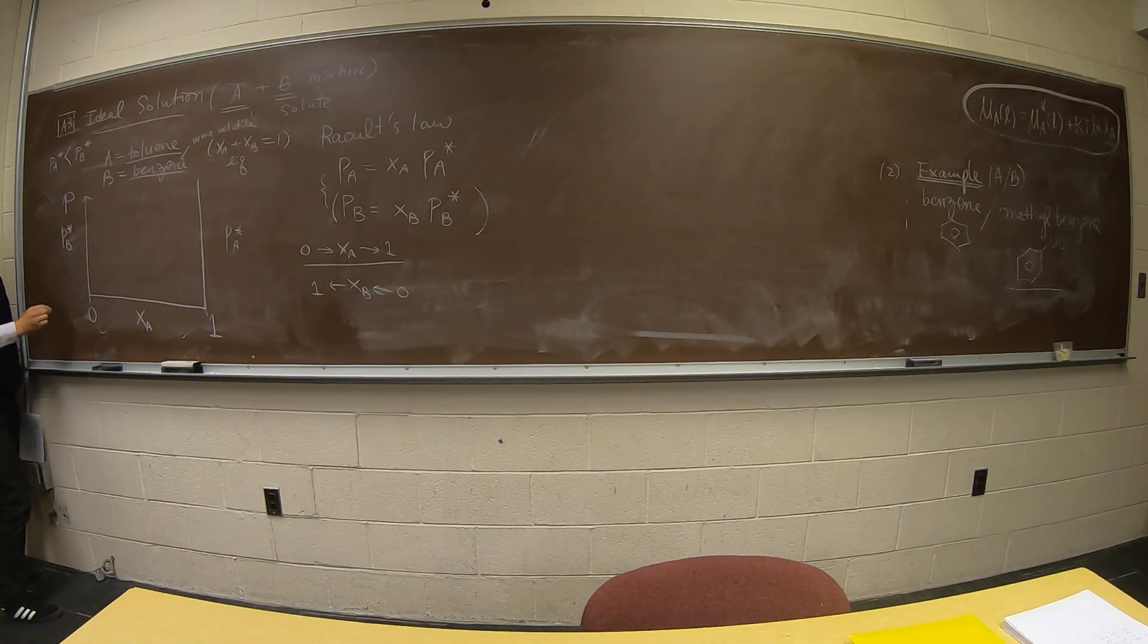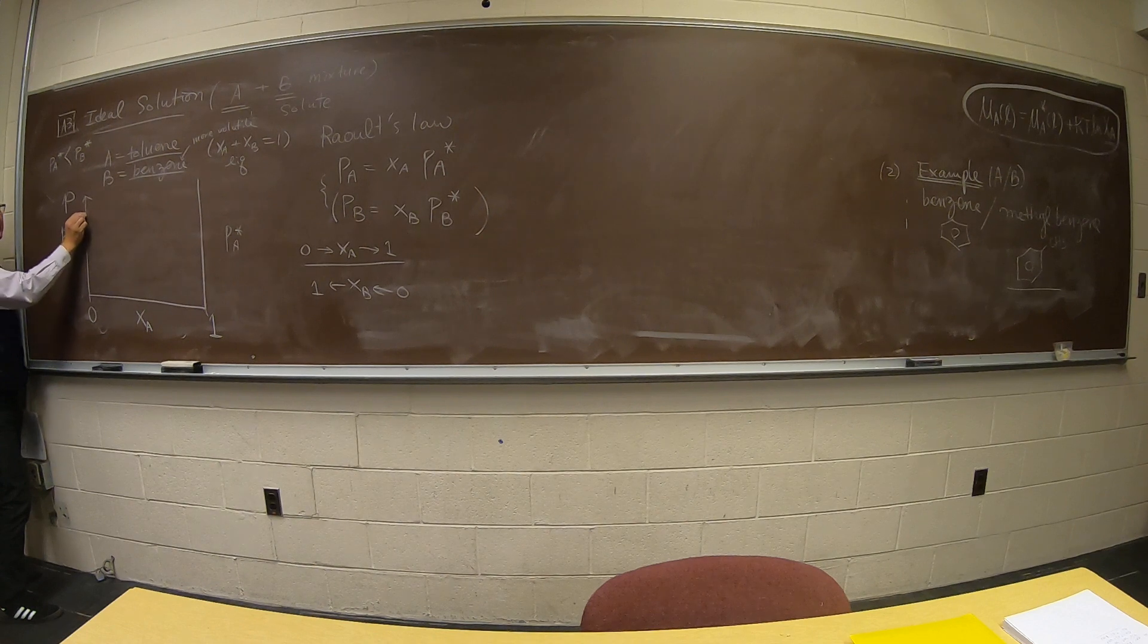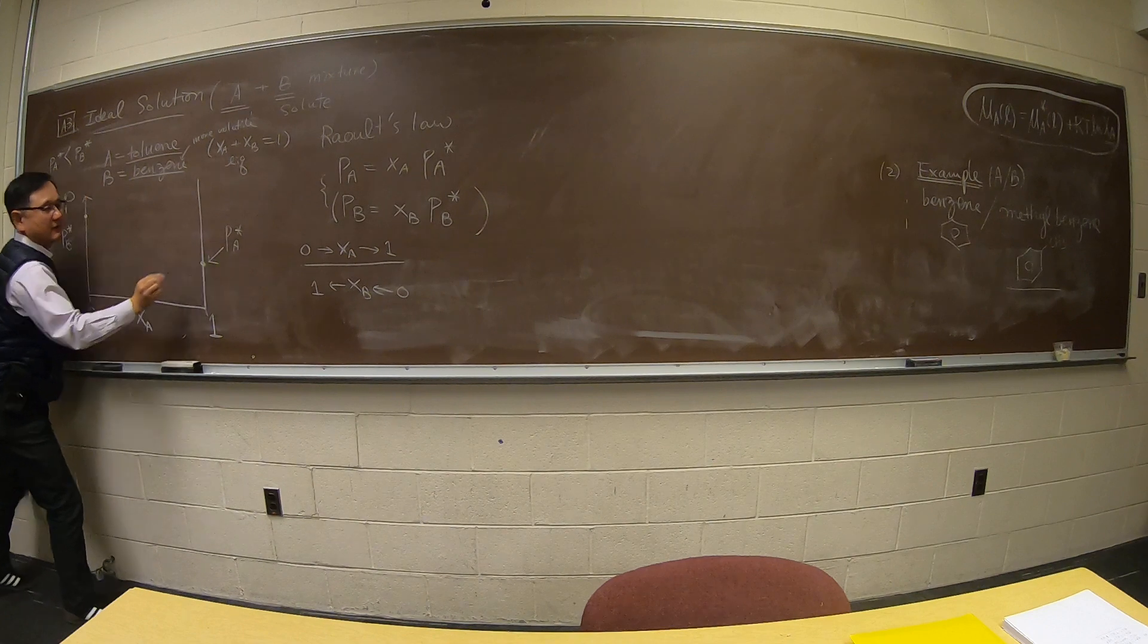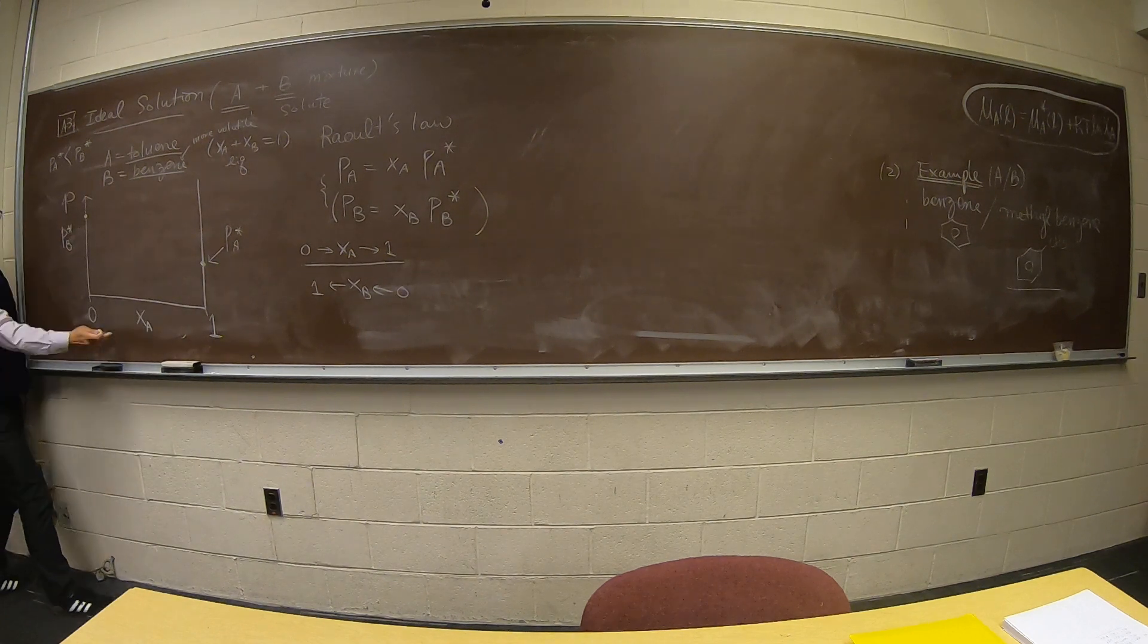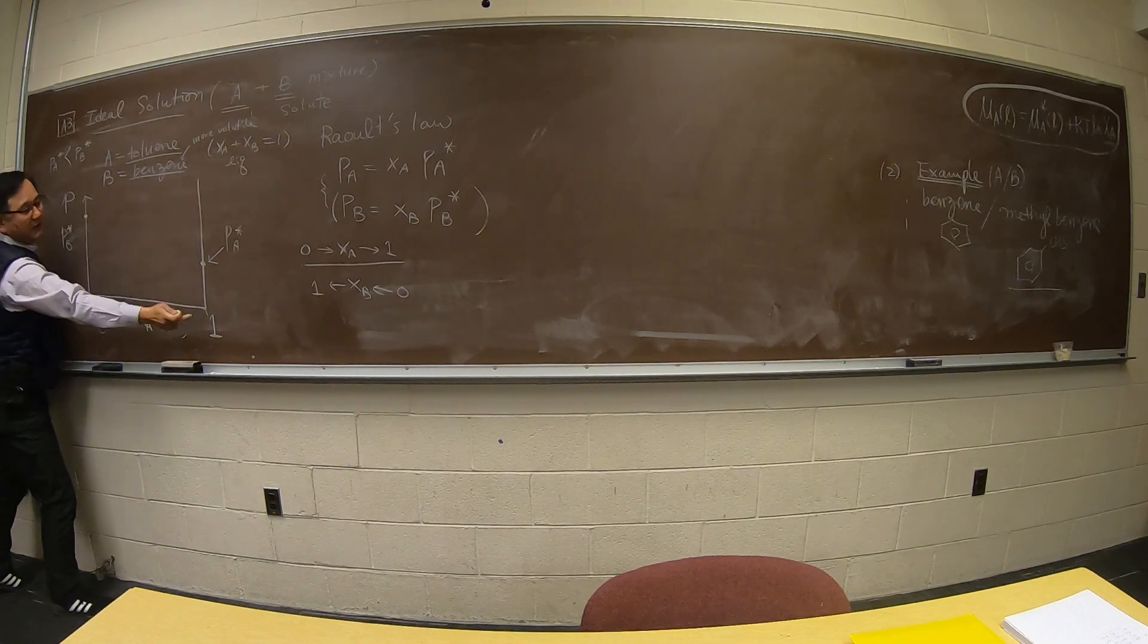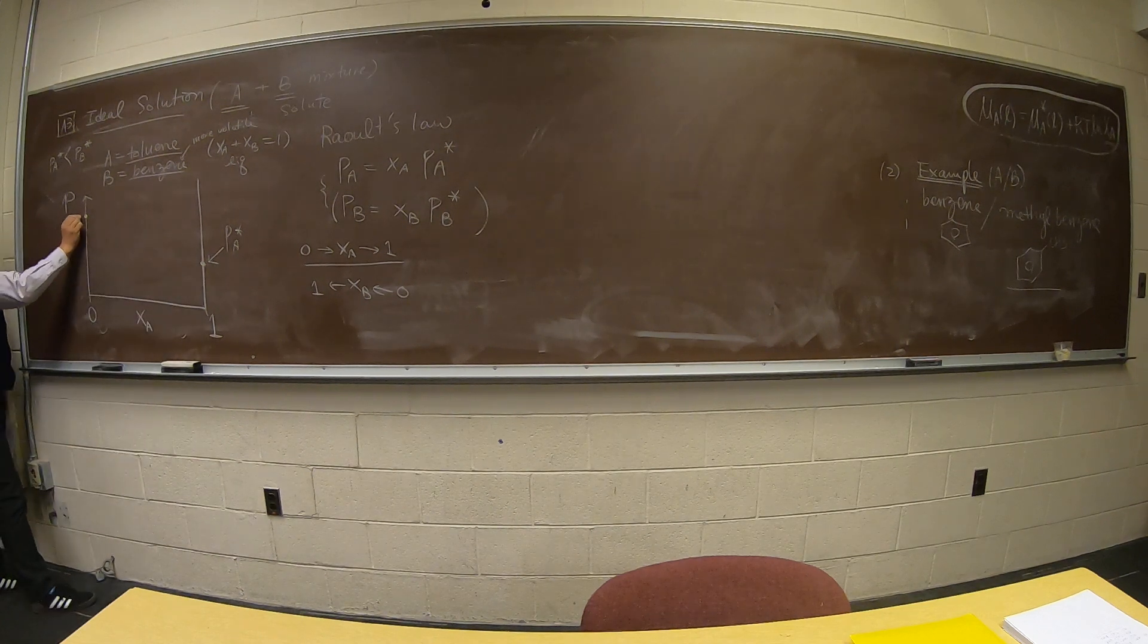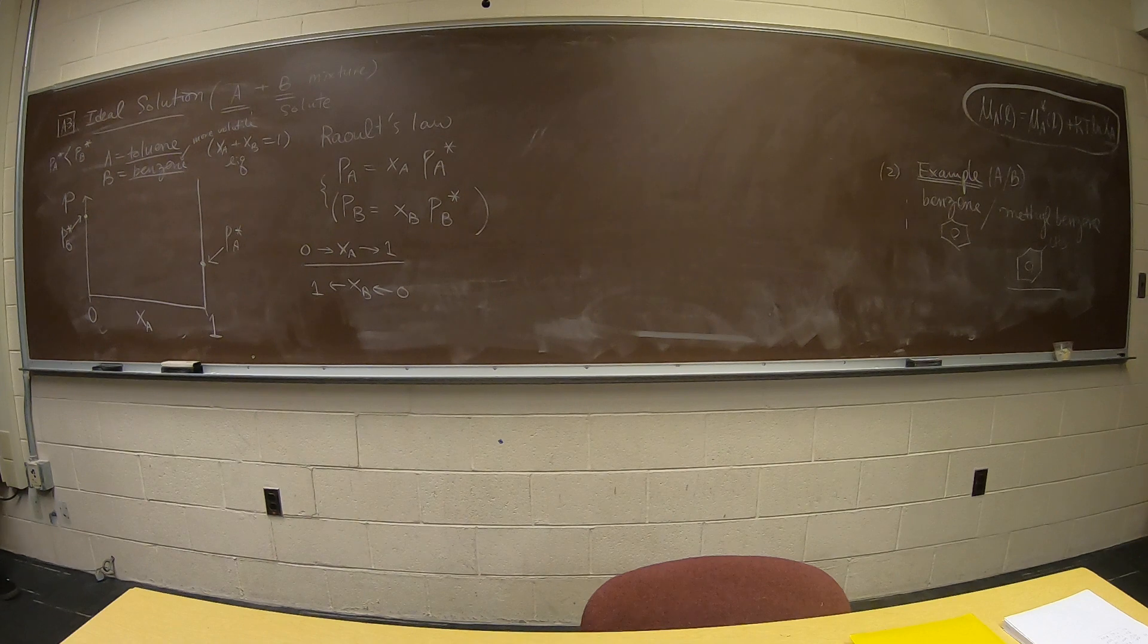So if I compare this versus this, which one has a higher vapor pressure? PB, benzene. Right? So therefore I can see this one should be here. And this one should be here. Which A is one hundred percent, lower vapor pressure. This is B, which is a high vapor pressure as a pure compound.